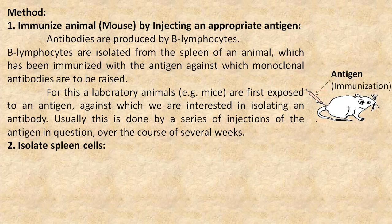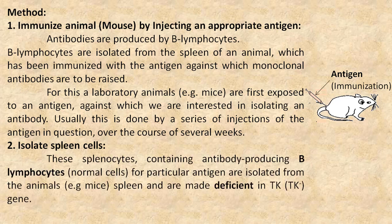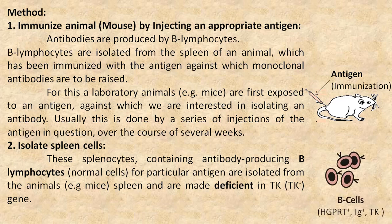The second step is to isolate spleen cells. These splenocytes, containing antibody-producing B lymphocytes for a particular antigen, are isolated from the animal's spleen and are made deficient in the TK gene.